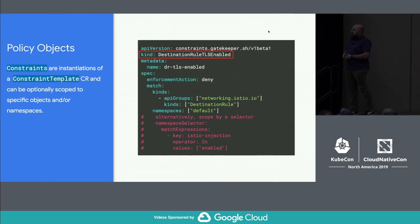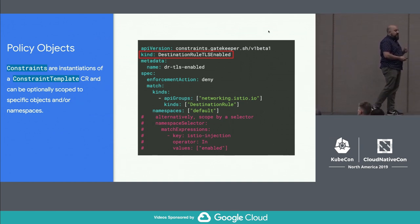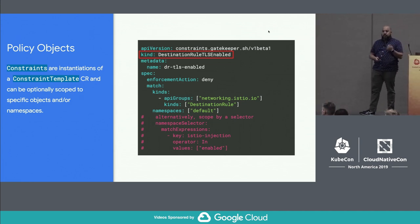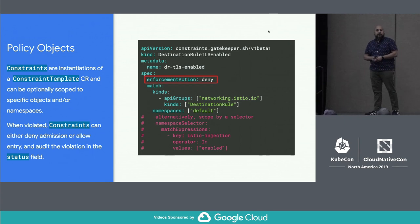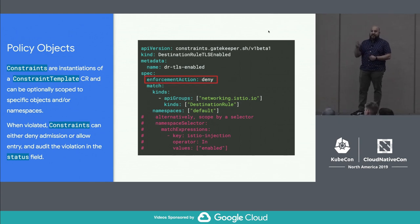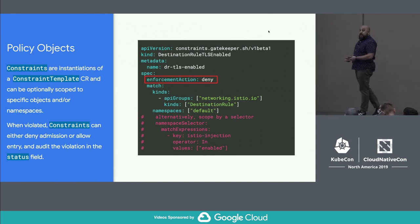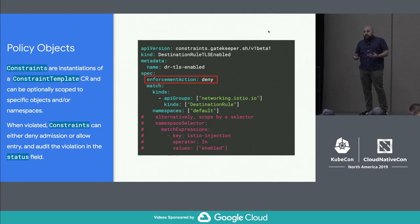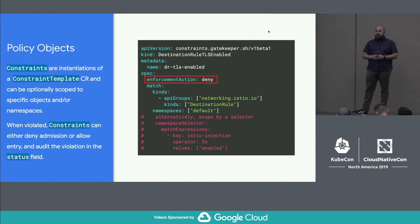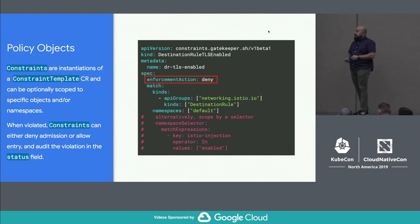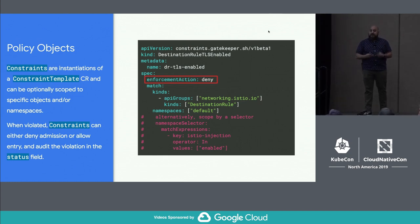The second half is a constraint object. A constraint takes that CR you created, and this is where you define the enforcement and scoping of that rule. In this example, we have an enforcement action of 'deny' — that tells the admission controller that if any object comes in that violates the rule, kick it right back out with an error message. But you also have the opportunity to audit incoming objects in 'audit' mode, which accepts those objects and lets you check audit violations later on. The bottom section is where we scope it.